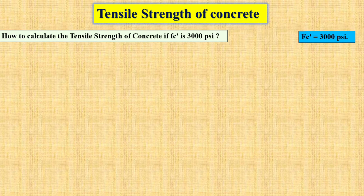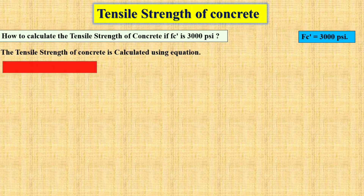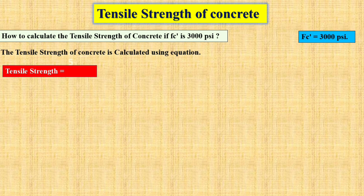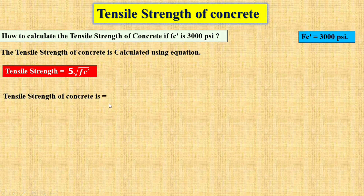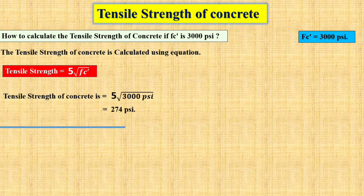Now suppose we have the compressive strength of the concrete as 3000 psi. To calculate the tensile strength of the concrete, we use the formula: tensile strength = 500 × √(fc). So the tensile strength of the concrete with fc = 3000 psi equals approximately 274 psi.